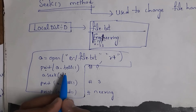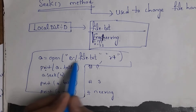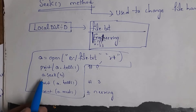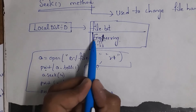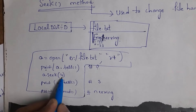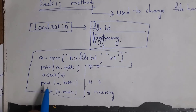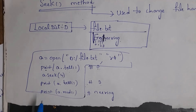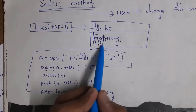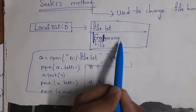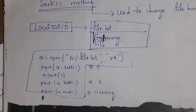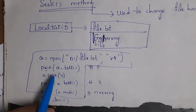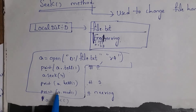Once again I will explain this code. a.tell is used to identify cursor position. Whenever I open this file, my cursor is at index number 0, so print(a.tell) gives output 0. I want to change cursor position to index number 3, meaning I want to place my cursor after 4 characters, so I written a.seek(4). It places my cursor after 4 characters. print(a.tell) gives output 3. print(a.read) prints characters from index 3, that is N, E, E, R, I, N, G. After operations, write a.close to close the file. Open is a function; tell, seek, read and close are methods.